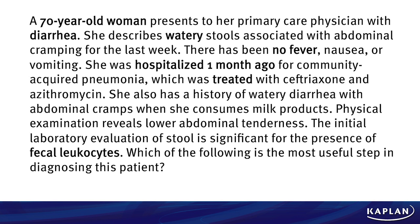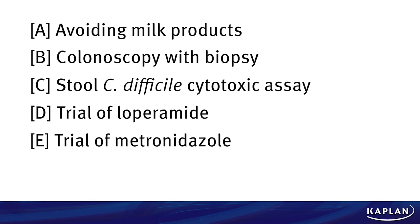The test makers also threw in that she has a history of watery diarrhea with abdominal cramps when she consumes milk products — so you might think lactose intolerance. But what's different here is this is taking place within the time span of one month from her hospitalization. Could it be due to the same thing? Sure, but on test day you are critical thinking and picking what's best likely due to. Physical exam reveals lower abdominal tenderness. Initial lab eval of the stool is significant for fecal leukocytes — that's big. So: which of the following is the most useful step in diagnosing this patient? Tell her to avoid dairy products; do a colonoscopy with biopsy; take a C. diff cytotoxic assay of the stool; give a trial of loperamide; or give a trial of metronidazole. Take a few moments and select what you think is the best answer.